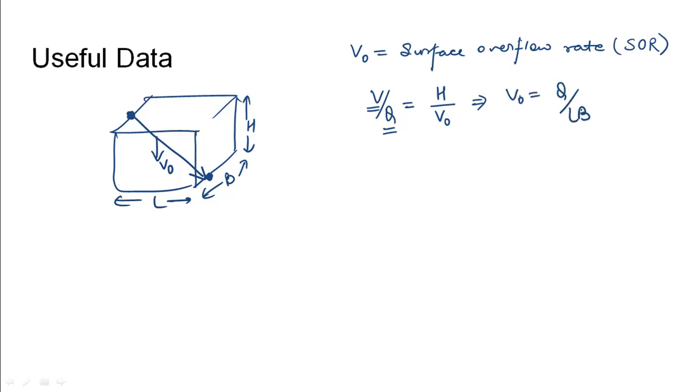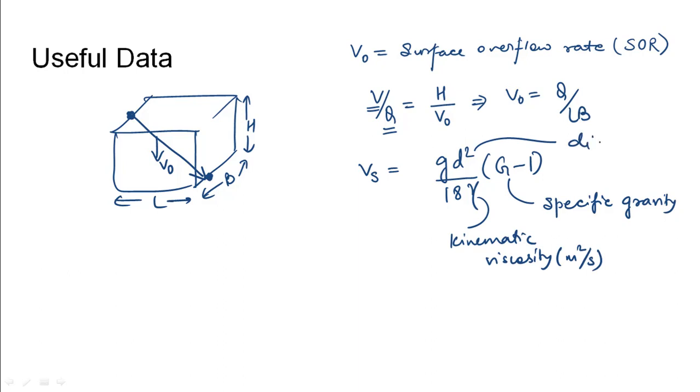Another concept is the settling velocity given by Stokes law: Vs = (g×d²)/(18γ)×(G-1), where G is specific gravity, γ is kinematic viscosity, d is particle diameter, and g is gravity. The efficiency of removal is η = (Vs/V₀)×100. If a particle has settling speed greater than or equal to V₀, its removal efficiency is 100%. If less, use this equation.